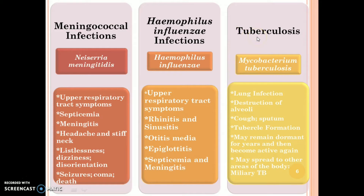Tuberculosis is caused by Mycobacterium tuberculosis. The symptoms are lung infection, destruction of alveoli, cough and sputum formation. Tubercle formation may remain dormant for years and then become active again. It may spread to other areas of the body, called miliary tuberculosis.